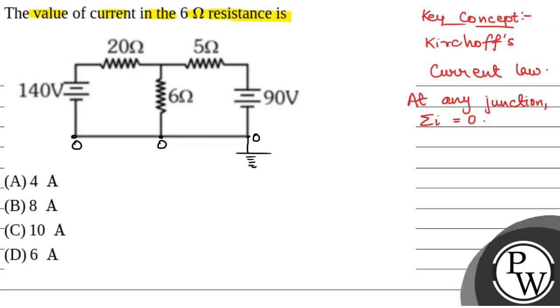Now, we can see that between this point and this point, there is a potential difference of 90 volt. So, here, the potential will be 90 volt, as this is positive side.